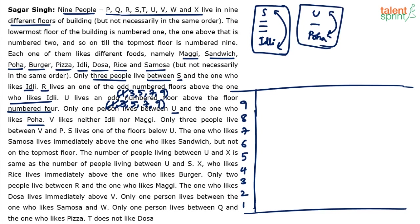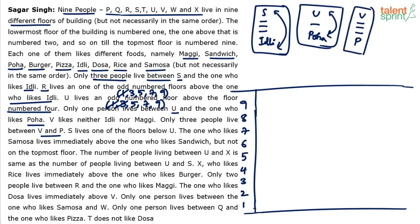V likes neither idli nor maggie. Only three people live between V and P, so we represent that as V — — — P.